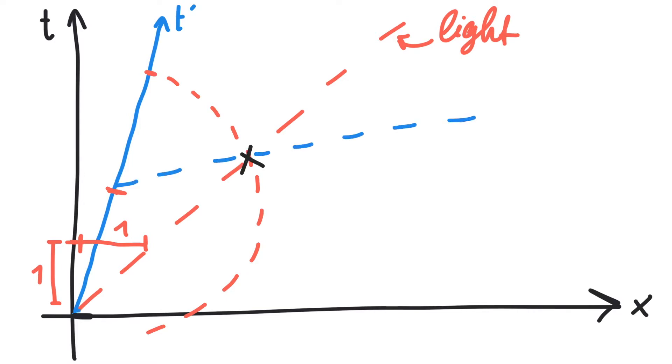The assumption that light travels with the speed of light in all frames led us to the conclusion that the axes for a moving observer in the Minkowski diagram are rotated towards each other.